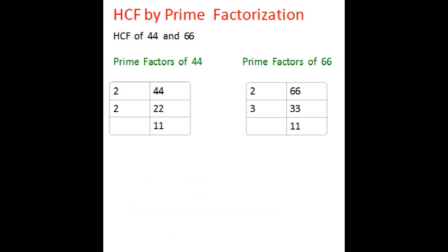The prime factors for 44 are, start dividing by 2, the lowest prime number. Divide by 2, answer is 22. Again divide by 2, answer is 11. 11 is the prime number. We stop.